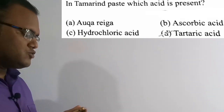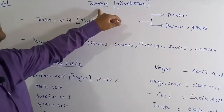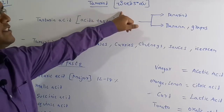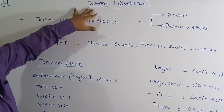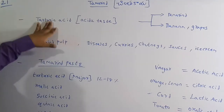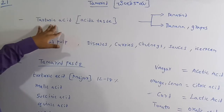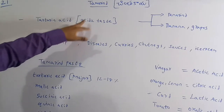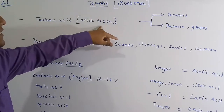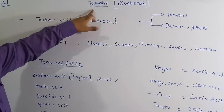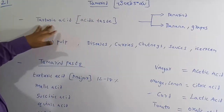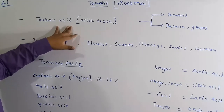Let's discuss some important facts about tamarind. Tamarind — in Telugu we call it 'chintakar'. The major acid present in tamarind is tartaric acid. Because of this tartaric acid, tamarind has an acidic taste. There are a lot of acids in tamarind, but among them the major component is tartaric acid, which is around 12 to 18 percentage.